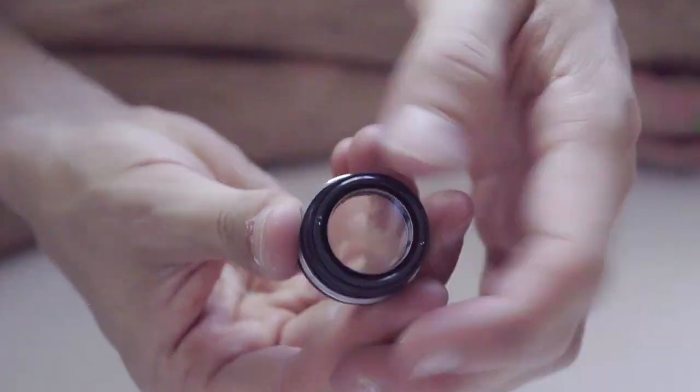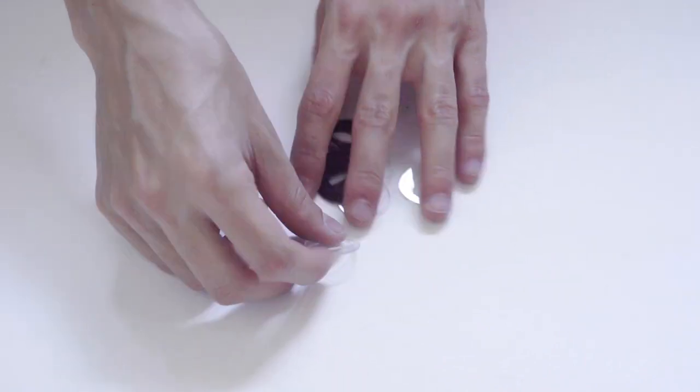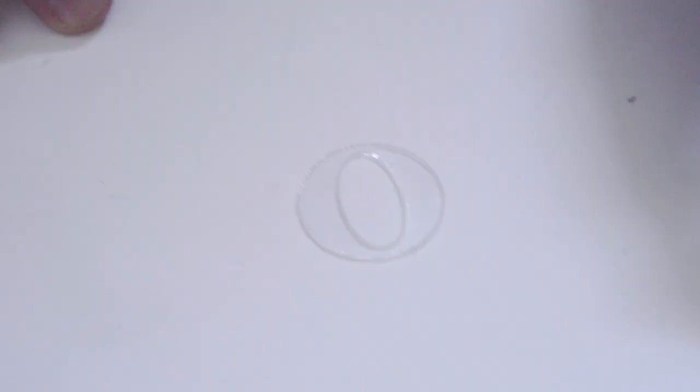I had the acrylic discs from the previous tutorial, so I just grabbed one of those. You can choose your aperture value. I'm going with f2.8 here. Sand it down as thin as you can and be careful not to break it.